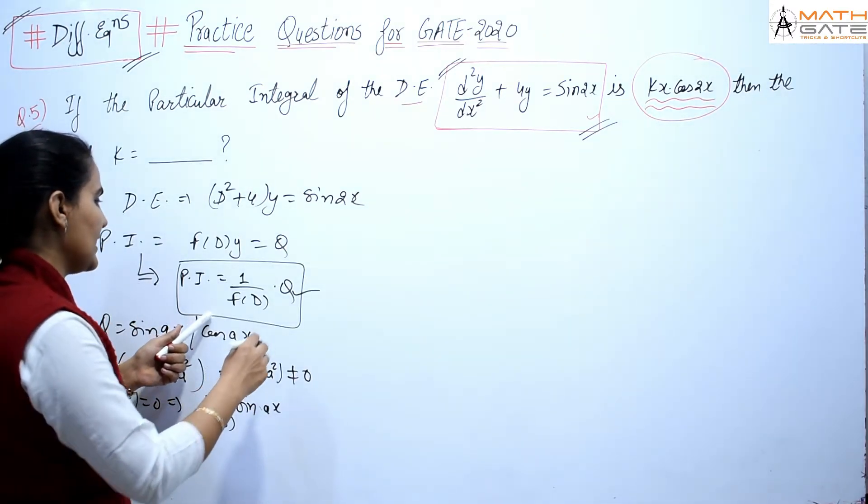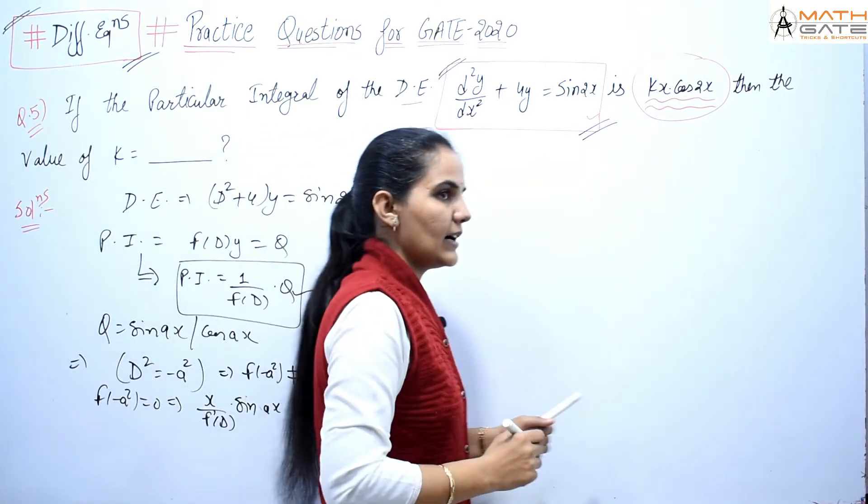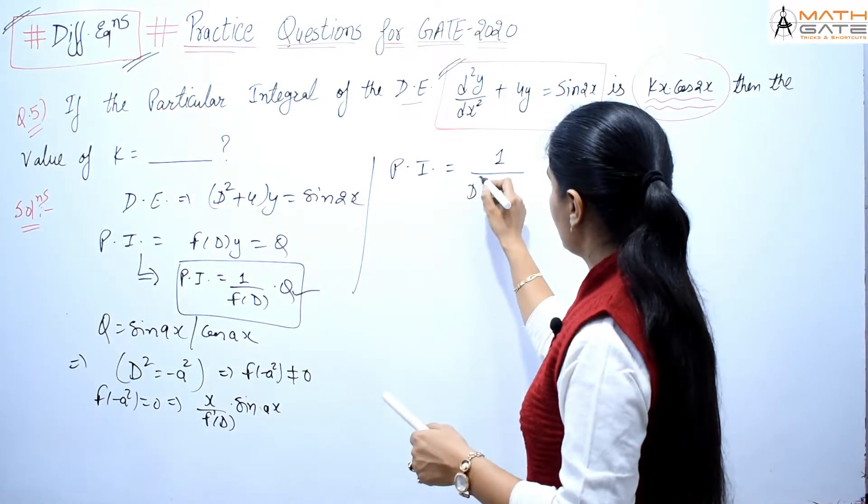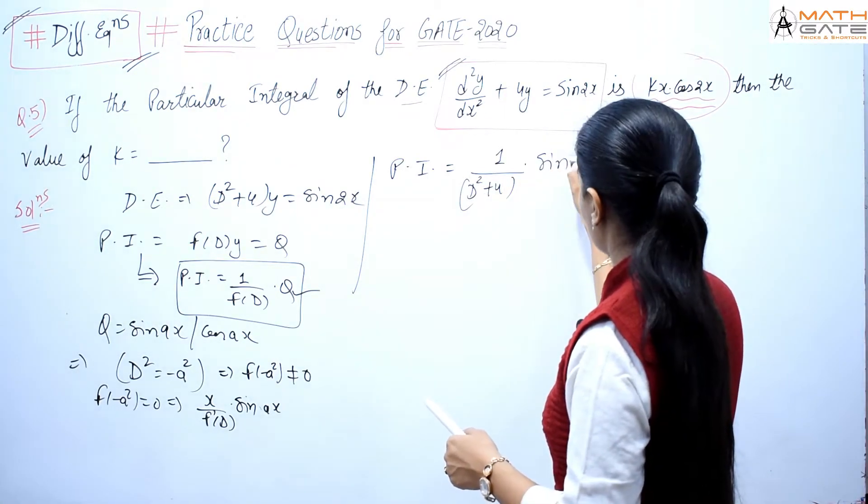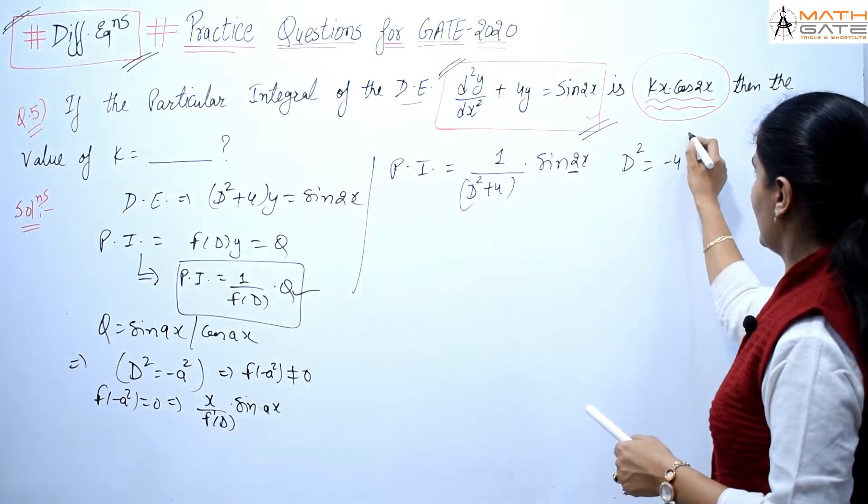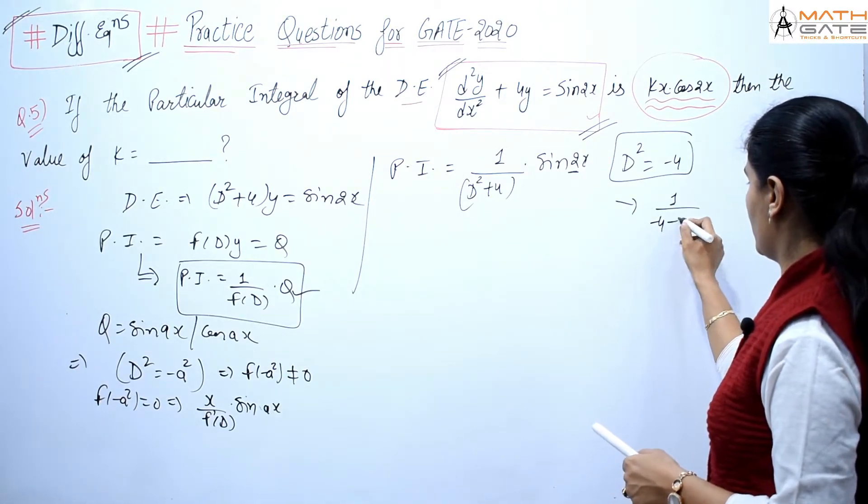So now let's solve this question. If I start to solve this problem, then PI equals 1/(D² + 4) times sin(2x). Here, sin(2x) means that I have to replace D² with -4. So just like I have to replace it, then it becomes -4 + 4. It becomes 0.